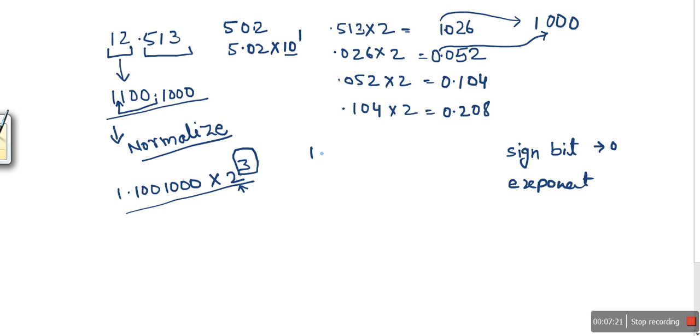We have seen a bias of 127 will be added into the exponent, so the final exponent will be 130. So in this part we will write the binary format of 130. Now after this point, this part will be taken as mantissa.